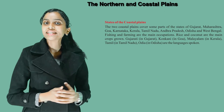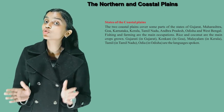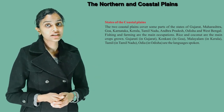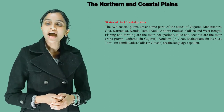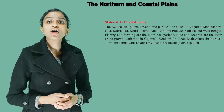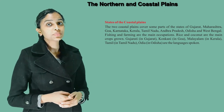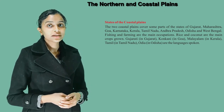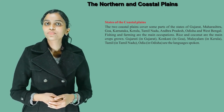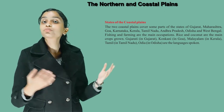States of the Coastal Plains. The two coastal plains cover some parts of the states of Gujarat, Maharashtra, Goa, Karnataka, Kerala, Tamil Nadu, Andhra Pradesh, Odisha and West Bengal. Fishing and farming are the main occupations. Rice and coconut are the main crops grown. Languages spoken are Gujarati in Gujarat, Konkani in Goa, Malayalam in Kerala, Tamil in Tamil Nadu, and Odia in Odisha.